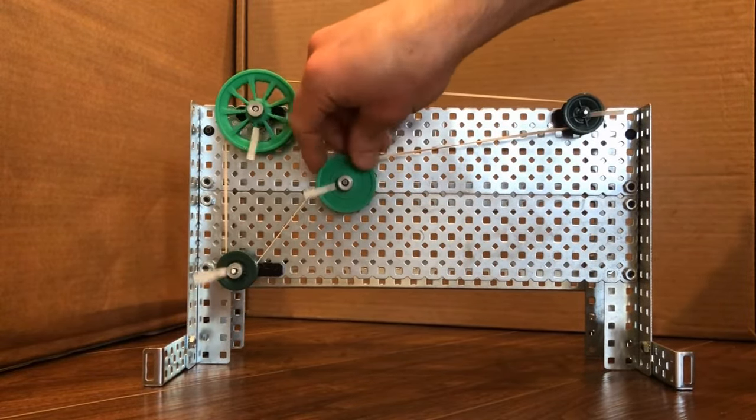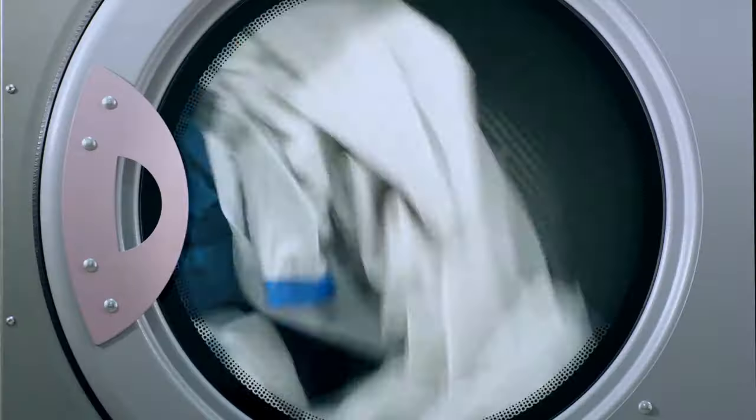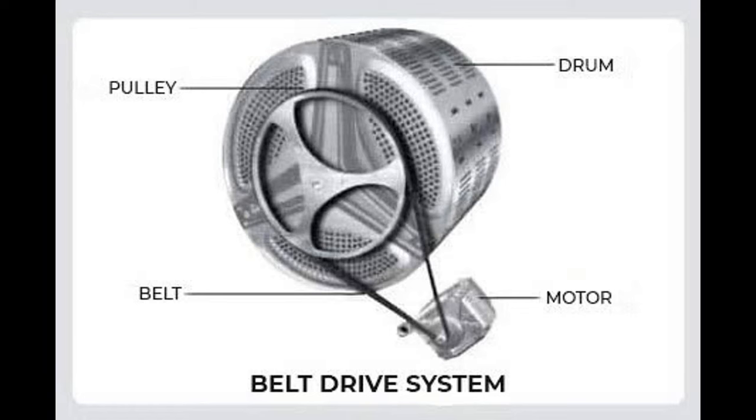Belt and pulleys are much quieter and less expensive than a sprocket and chain setup. So you can find them within spinning household objects that cannot be too loud, like washing machines and treadmills.